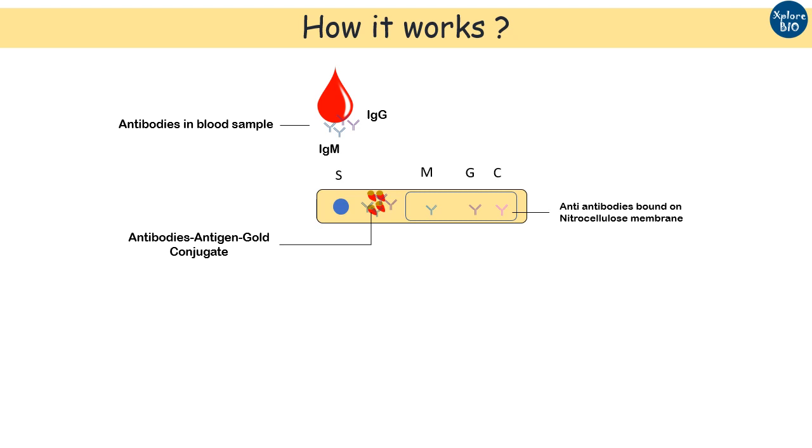This conjugate moves towards the test line area. The first line is the M line that contains anti-IgM antibodies and binds to the conjugate IgM antibodies in the sample and produces a red color.